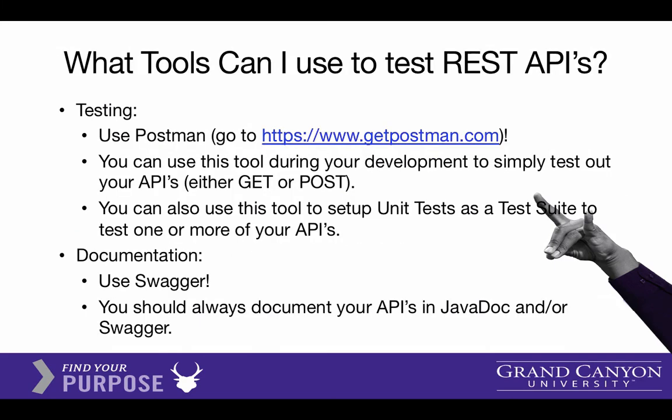As soon as you start creating APIs, you're going to have to test them. You can use them in your browser, but you can also test to see how well they work with a program called Postman — it's at GetPostman.com. Download that and take a look at their tutorial page after you create this JSON service, and you'll understand why it's an important program.